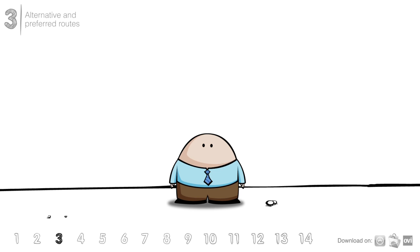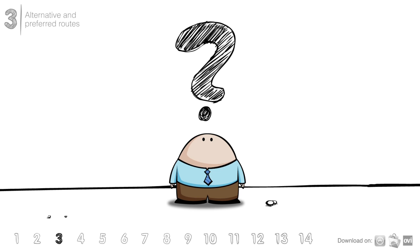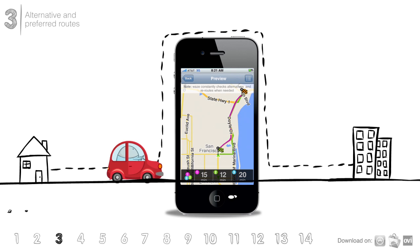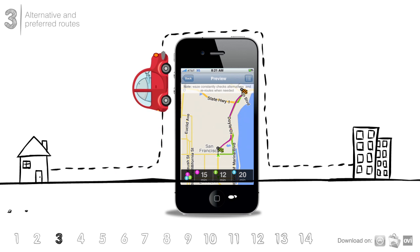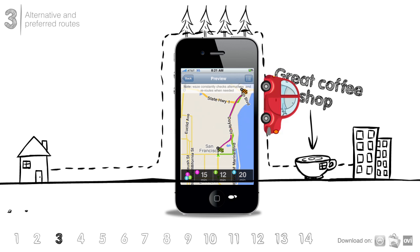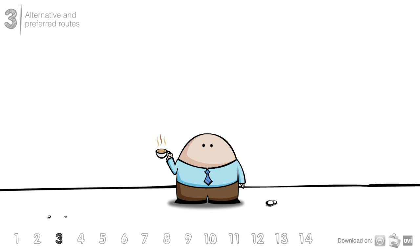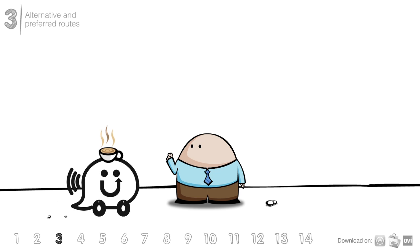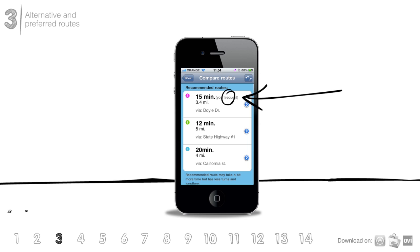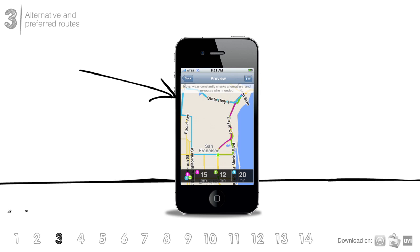What do we mean by a preferred route? Well, let's say you like to drive to work through a route that's ten minutes longer than the one Waze suggests for you, because it's prettier, or because of that great coffee shop along the way. Whatever the reason, other navigation systems will ignore this preference, but not Waze. We'll show your preferred route as one of your alternatives and let you pick which way you'd like to go each time.